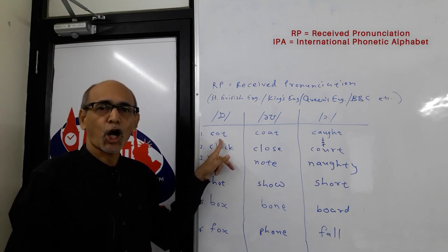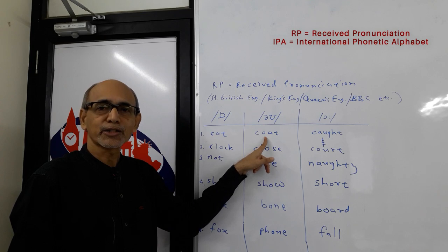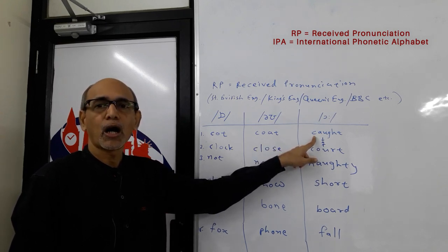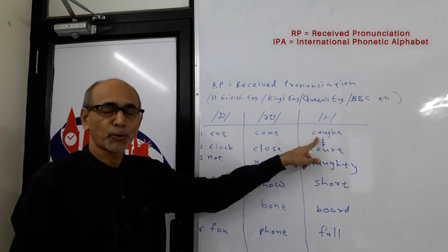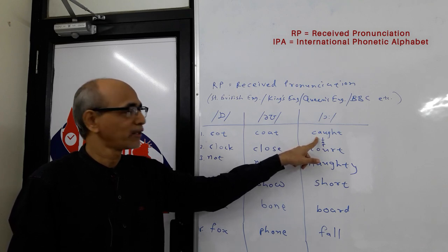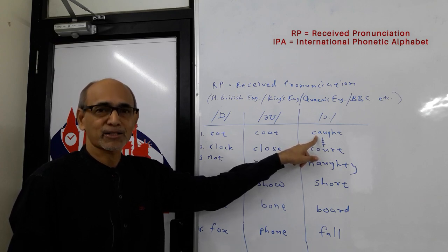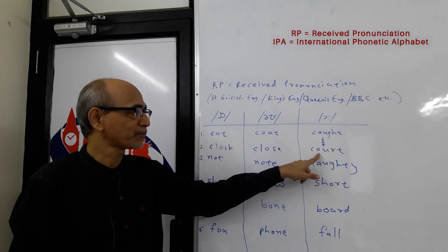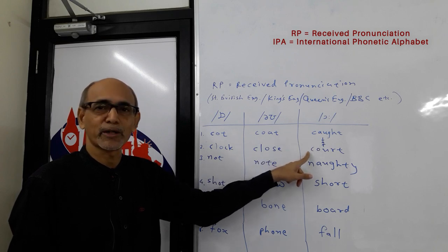Let's practice these three sounds with the word COT. The first sound: COT. The second sound: COT. The third sound: COT. Now the same word COT is spoken the same way, but it can be written in two different ways. You can write it as CAUGHT, which is the past tense form of 'catch'. The same pronunciation can also have the spelling COURT. Both these words are spoken the same way: COT.